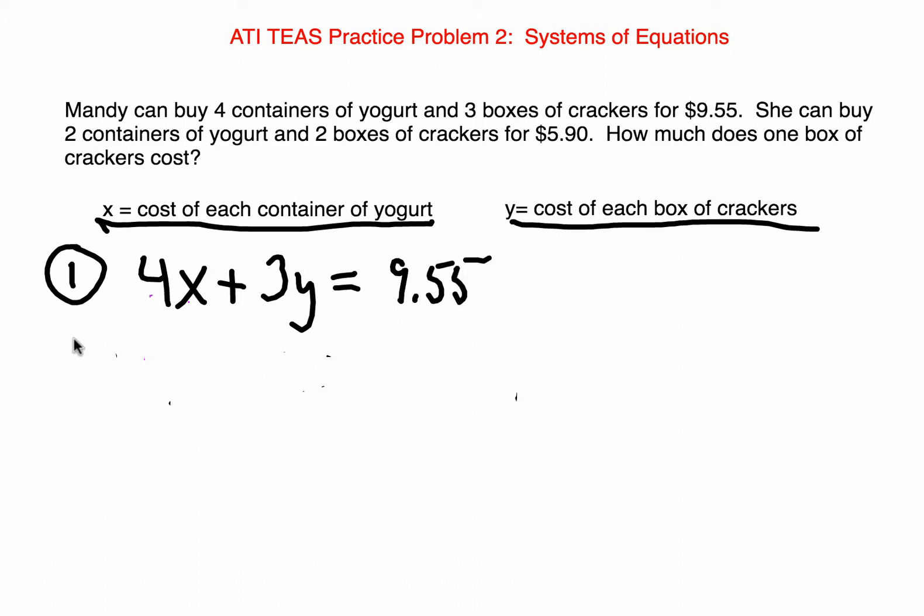Our second equation will involve two containers of yogurt times its unknown cost, plus two boxes of crackers and its unknown cost, which totals $5.90. These are the two equations that are going to allow us to find our unknown costs for each container of yogurt and each box of crackers.